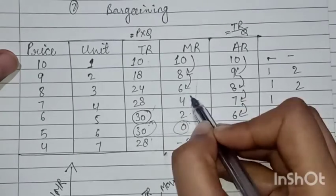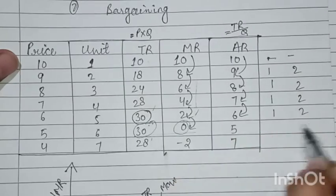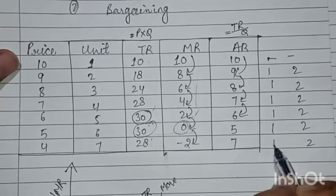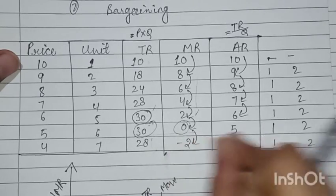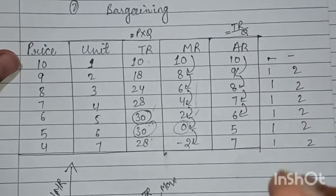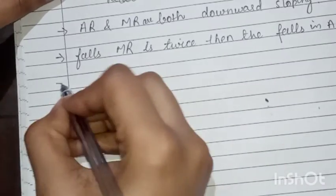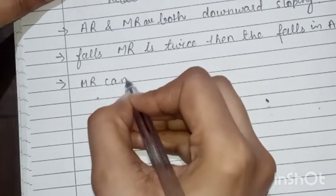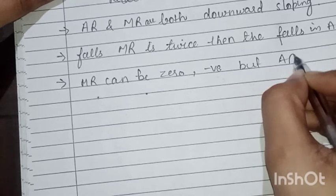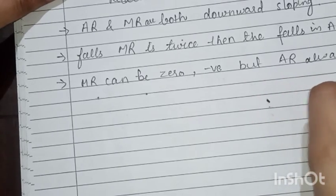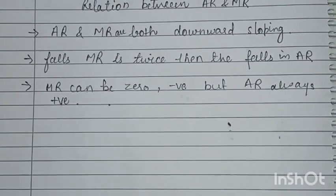The rate of fall in MR is twice that of AR. The third relationship is that MR can be zero or negative, but average revenue AR is always positive. These are the relationships between AR and MR. If you liked the video, please subscribe.